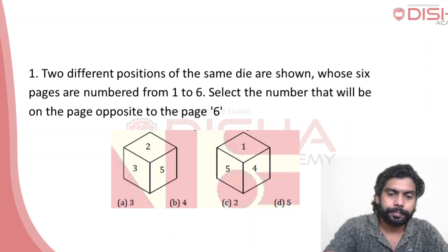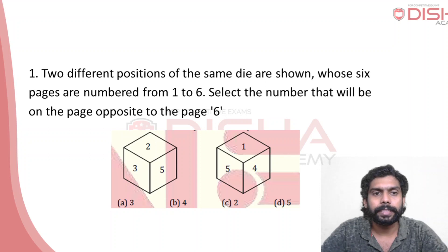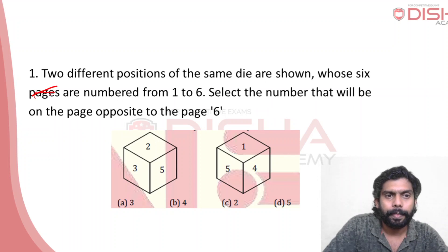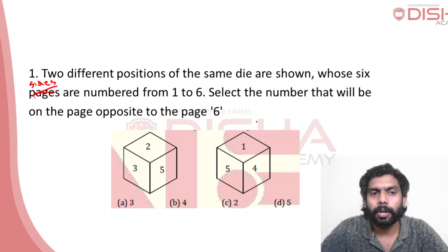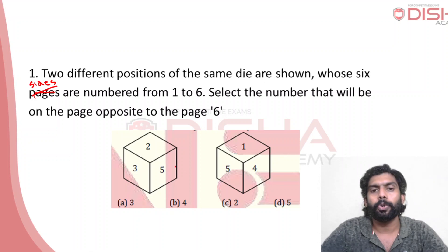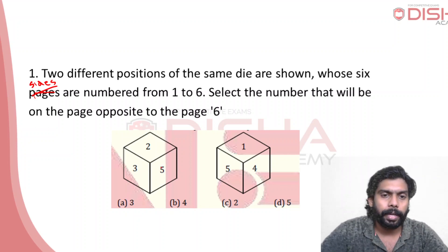First question: two different positions of the same die are shown. The die has six sides numbered one to six. Select the number that will be on the face opposite to the six. This is a common type of question. If a cube has an opposite, we find the common number. Here the common number is 5.